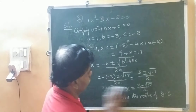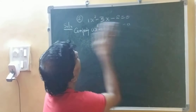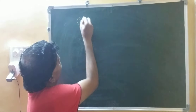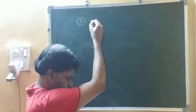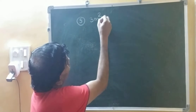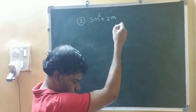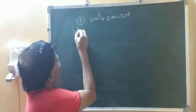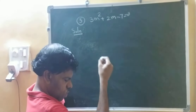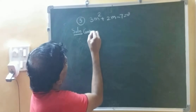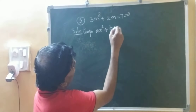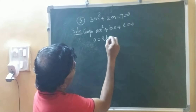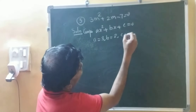Now next sum — third sum, similar one. We will quickly solve all the sums. Third sum: 3m squared plus 2m minus 7 is equal to 0. Solution — comparing with ax squared plus bx plus c equals 0, we get a equal to 3, b equal to 2, c equal to minus 7.